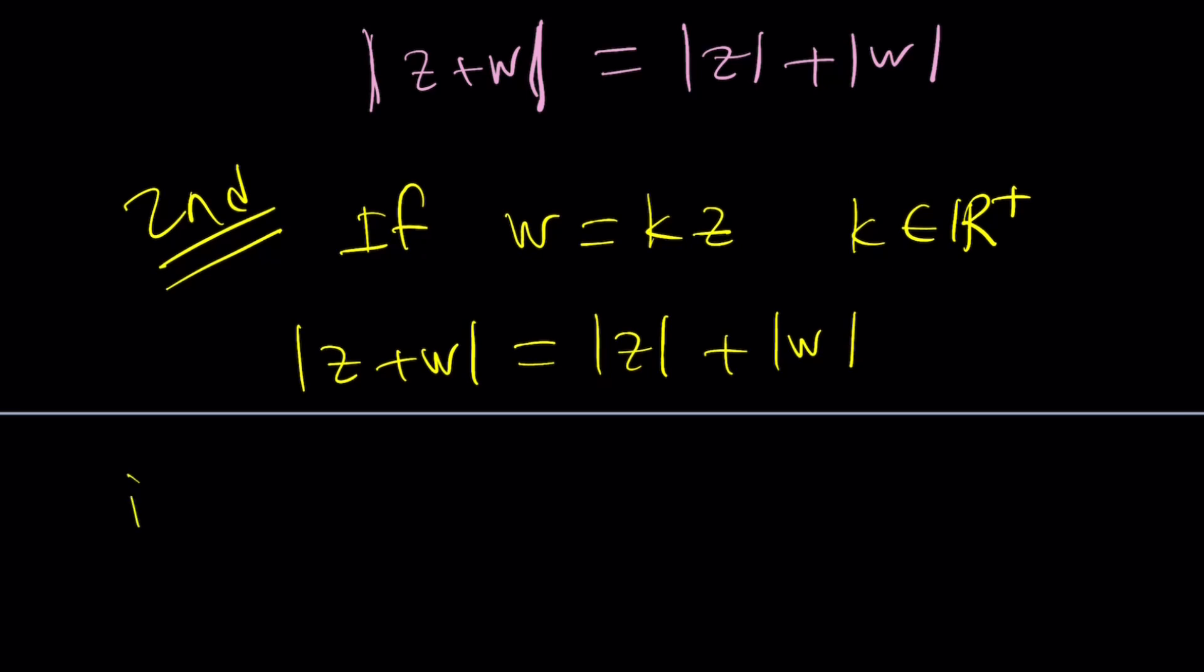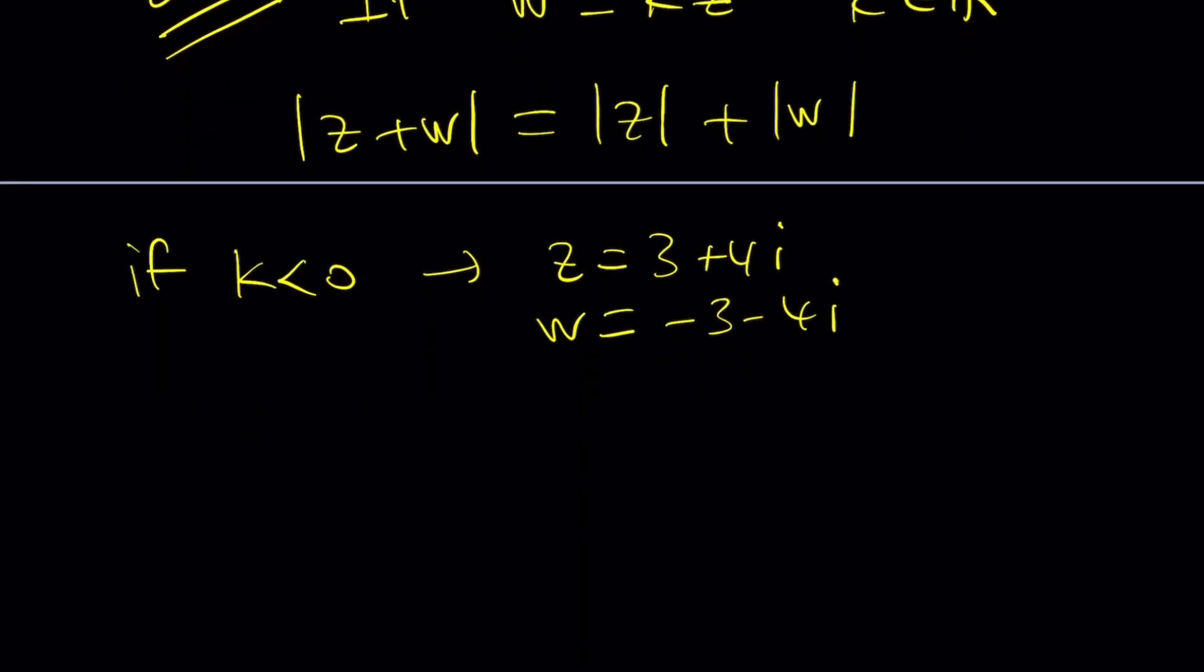Now, what happens if K is less than 0? First of all, let's go ahead and take a look. If K is 0, set Z equal to 3 plus 4i and W equal to negative 3 minus 4i, meaning that I used K equals negative 1.